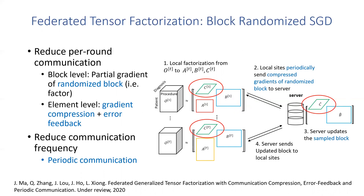At the block level, each client sends only the partial gradient of a randomly sampled block or factor rather than the full gradient of all blocks. For example, only C instead of both B and C in one round, as illustrated in the figure.